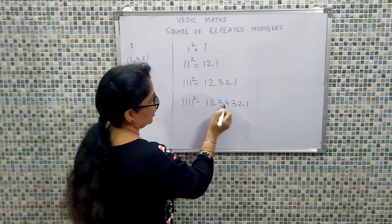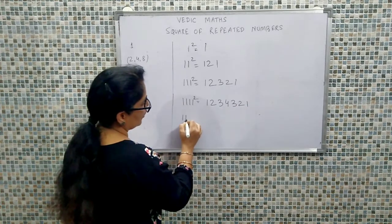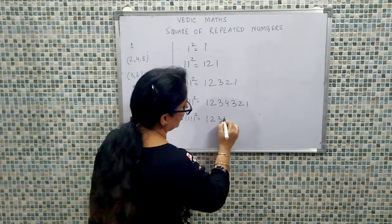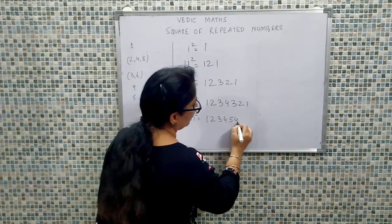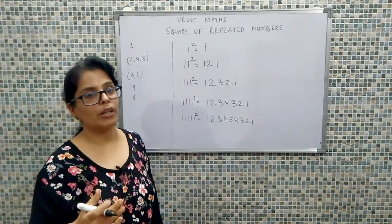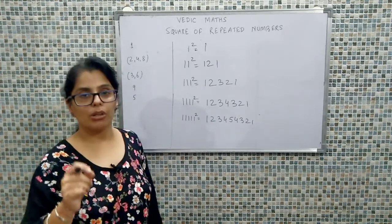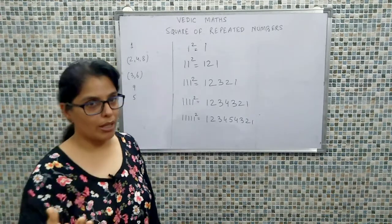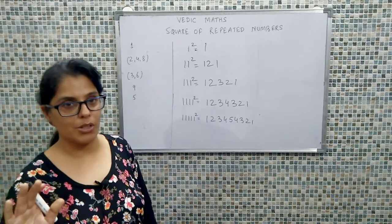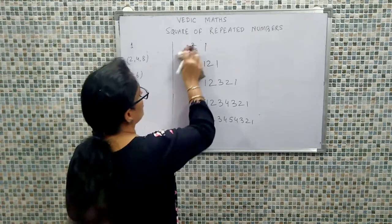If we have one repeated five times, it goes: one, two, three, four, five — then four, three, two, one. This is the pattern to calculate the square of repeated ones. Count the number of ones, increase up to that count, then decrease back. That is the basic logic when we talk about calculating the squares of ones.